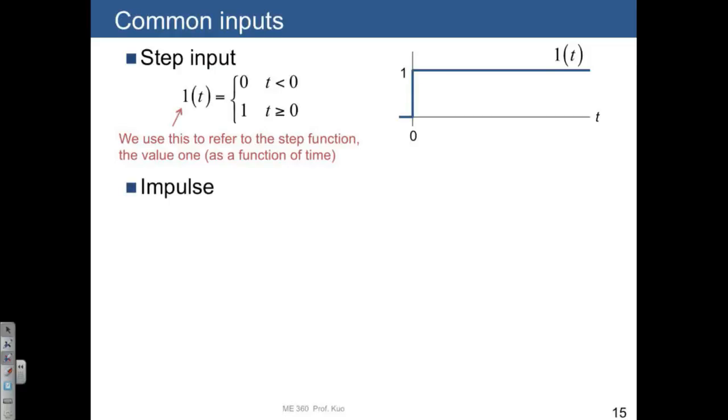There's also the impulse function, which has a rather strange definition. So the impulse function is always 0, except for one special time, which is it's going to be infinite at time equal to 0. So the plot of it looks like this, where you have this spike up here, and otherwise the function is just 0.